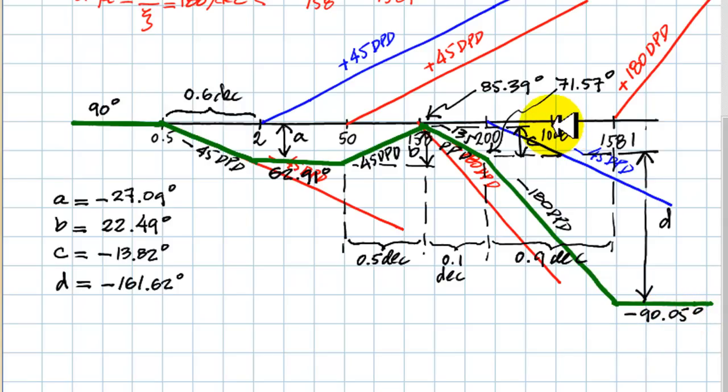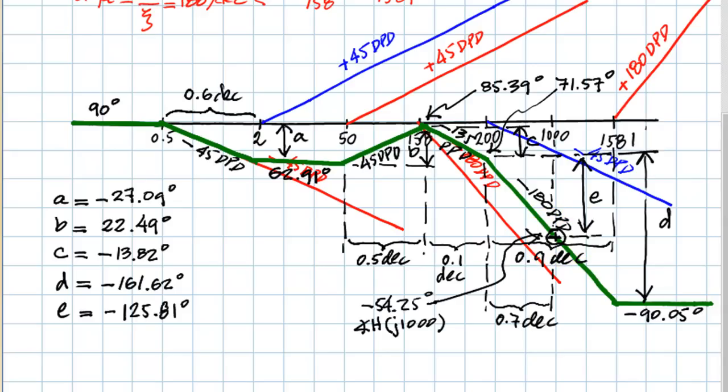We were asked also to find what was the phase at 1000 radians per second, down here, what is the value there? We just use the same technique, the distance from the nearest left knee, which is at 200 to 1000, is 0.7 decades, with this slope of negative 180 degrees per decade. We compute the drop, this drop E, negative 125.81 degrees, starting at 71.57, the value here of the phase of the transfer function at 1000 radians per second is negative 54.25 degrees. That is the phase of the transfer function at that frequency.